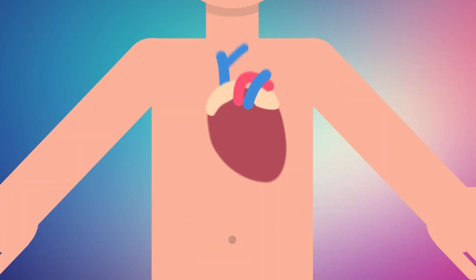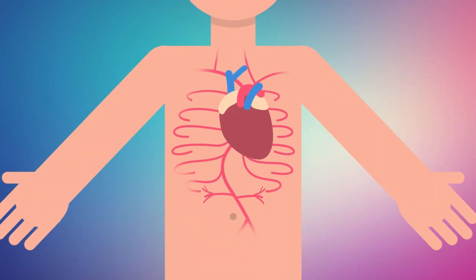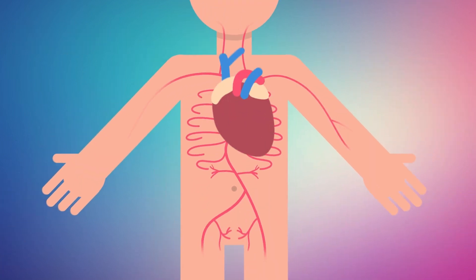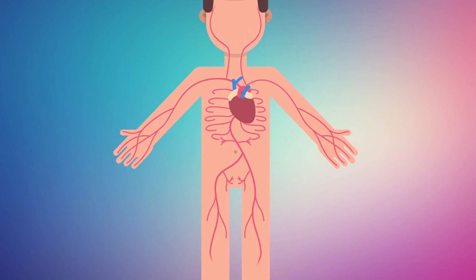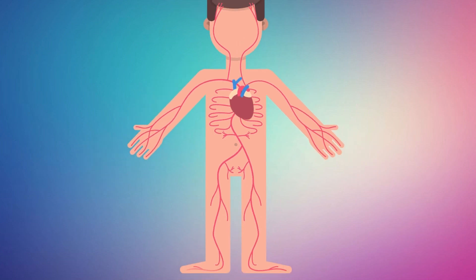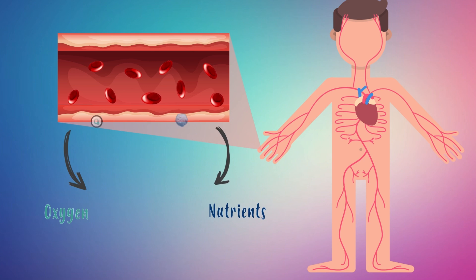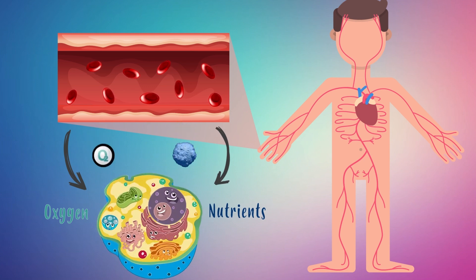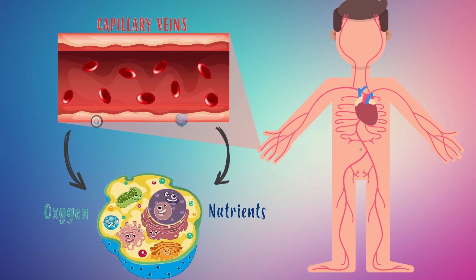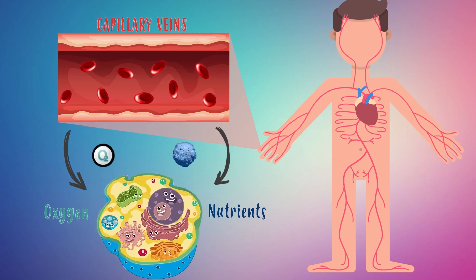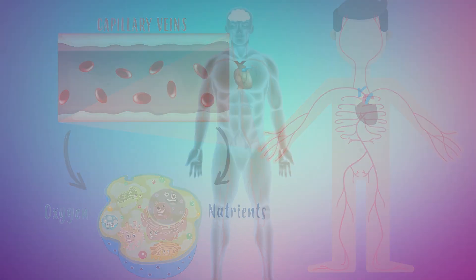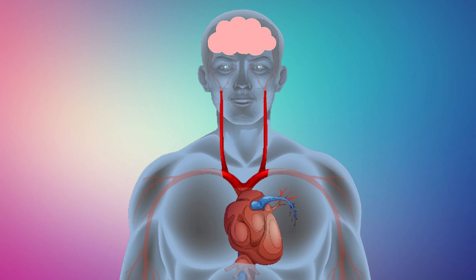From that moment, blood flows through our body through many veins. During this trip, the blood is delivering oxygen and nutrients to the cells through the capillaries. It reaches the neck, head and brain through one side.